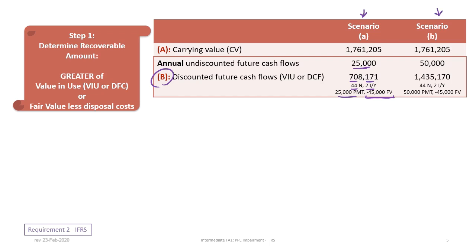Under scenario B, we undergo the exact same process, except now our cash flows are $50,000 annually. All you have to do is override the payment in your calculator with $50,000 PMT and recompute the present value at 44 periods at 2%, and you'll get $1,435,170. If you did not get these present values, stop the video and try again. If you still have trouble obtaining these values, ask your instructor for assistance.